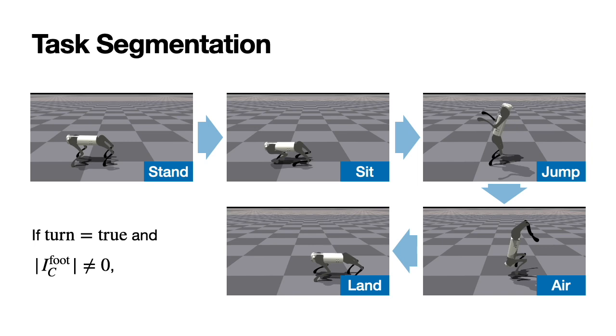Finally, if the robot touches the ground after a turn, it enters the landing stage. As shown in this example, stages and their transition rules can be set, and accordingly, the reward functions are defined for each stage.